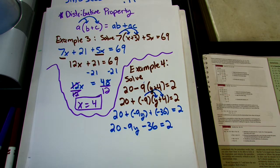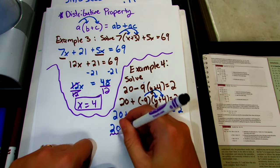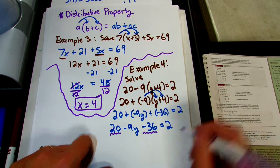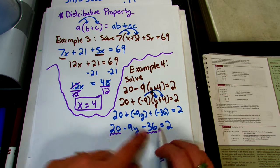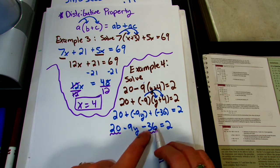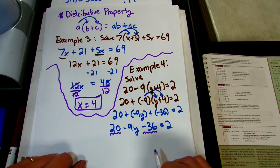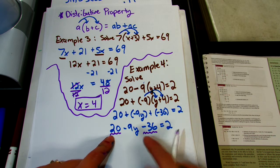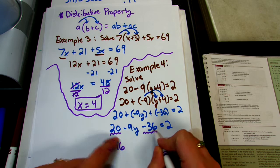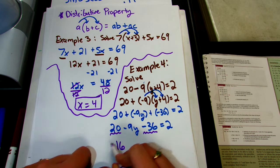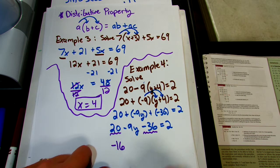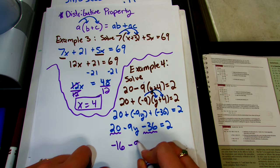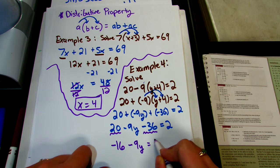Now we solve for y, but first we simplify. I see like terms: 20 and negative 36. 20 minus 36 — different signs means we subtract. 36 minus 20 is 16, but the negative is the bigger number, so it is negative 16. So we have negative 9y minus 16 equals 2.